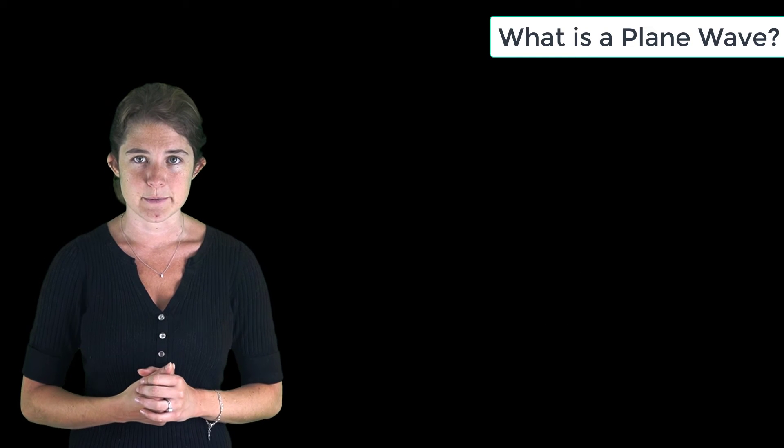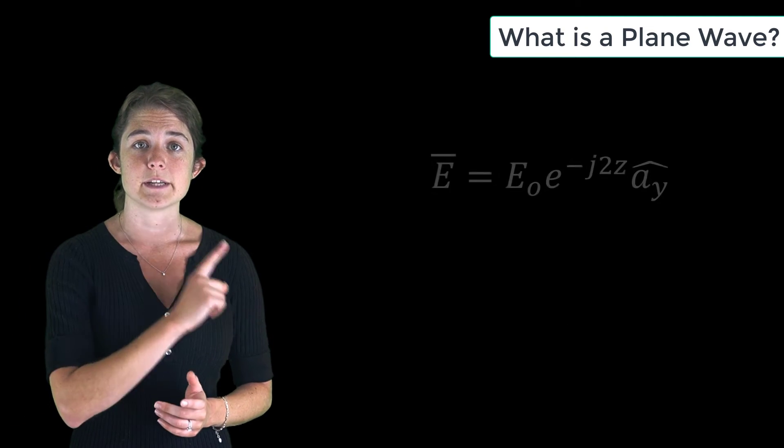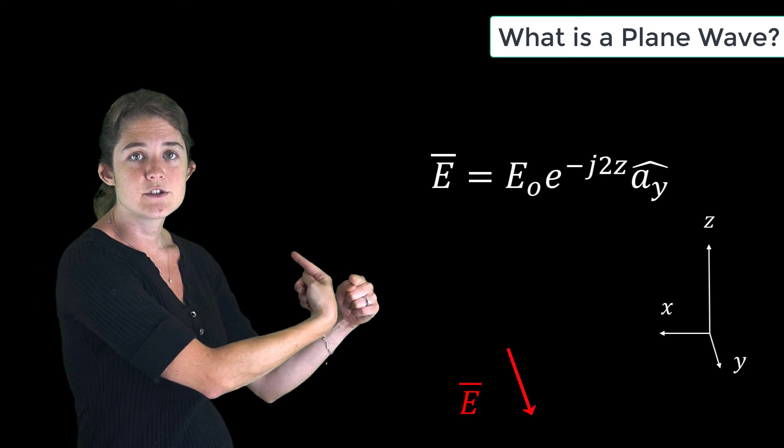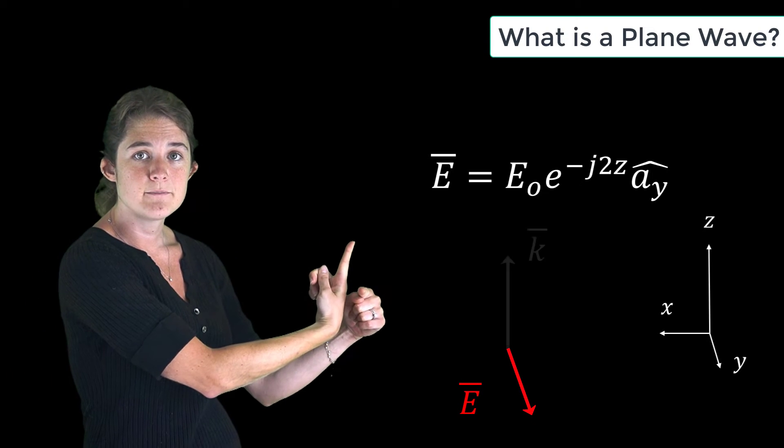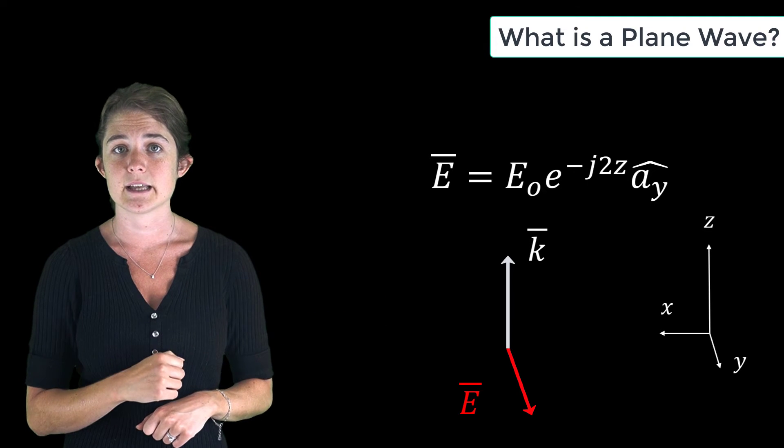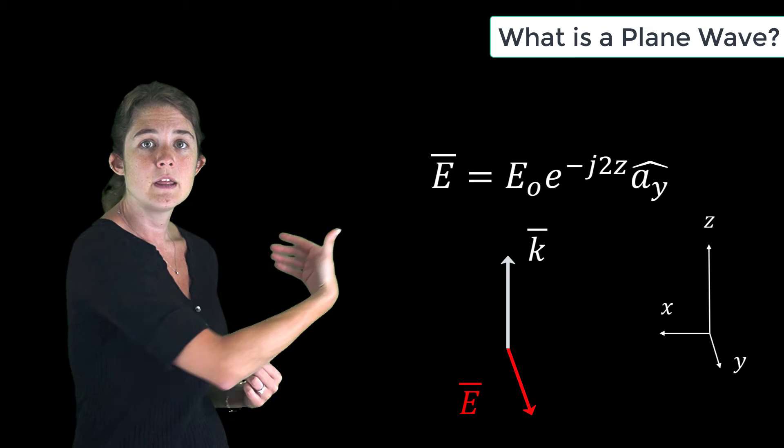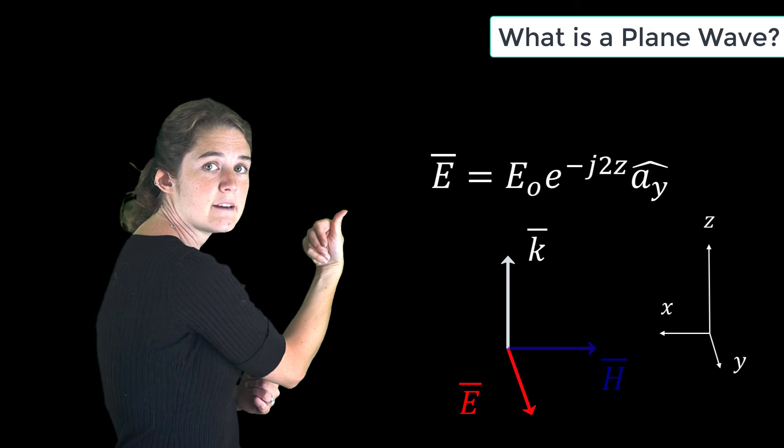To give a simple example, consider the electric field represented here. This electric field is pointing in the positive y direction and is traveling in the positive z direction. If we assume that this is the electric field of a TEM wave, then by the right hand rule, the magnetic field is pointing in the negative x direction.